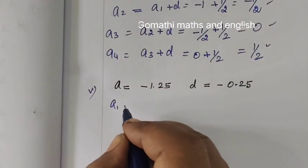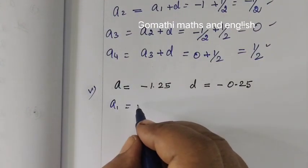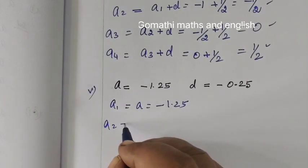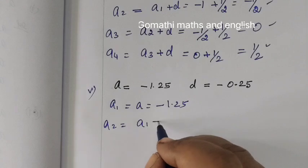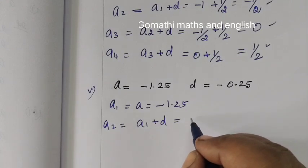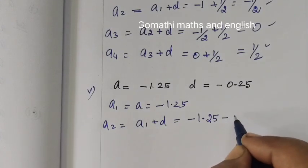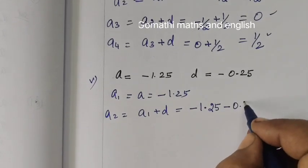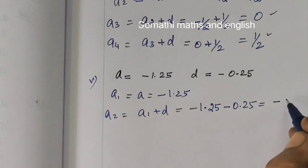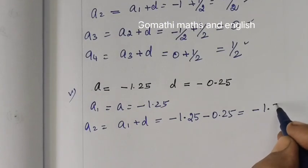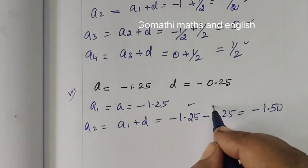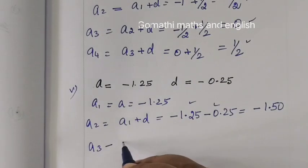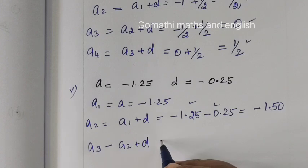Next one. a1 is a equal to minus 1.25. Then a2 equal to a1 plus d. a1 is minus 1.25 minus 0.25 gives minus 1.50. Then what is a3? a2 plus d gives...